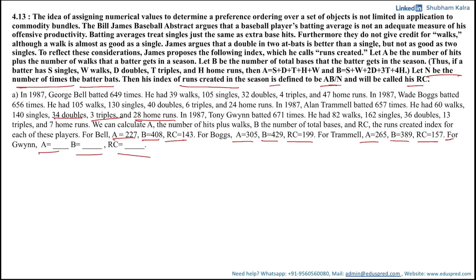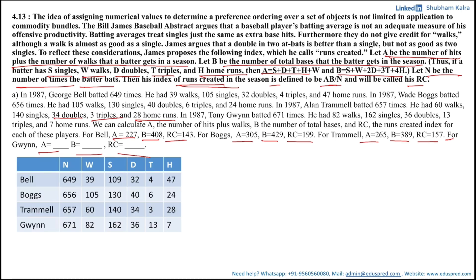To calculate Gwynn's values: A is the number of hits plus the number of walks; B is the number of total bases. S is singles, W is walks, D is doubles, T is triples, H is home runs, and RC is the Runs Created index. Let me put all the given information into a table so we can track everything clearly and avoid mistakes. The table has columns N, W, S, D, T, H for Bell, Boggs, Trammell, and Gwynn.